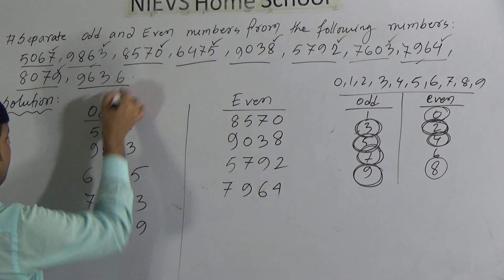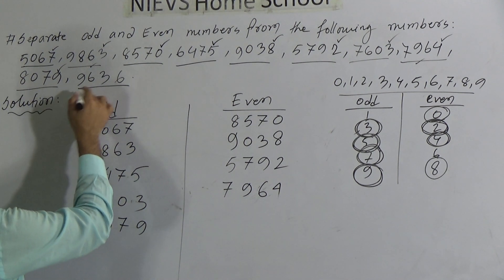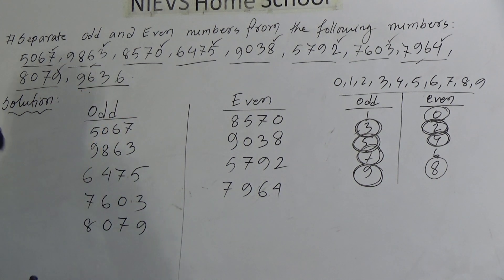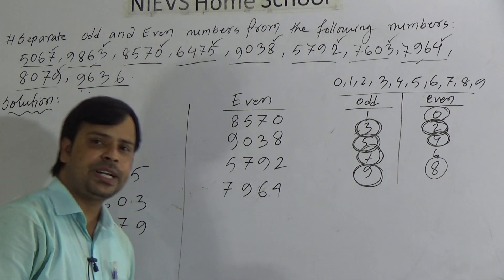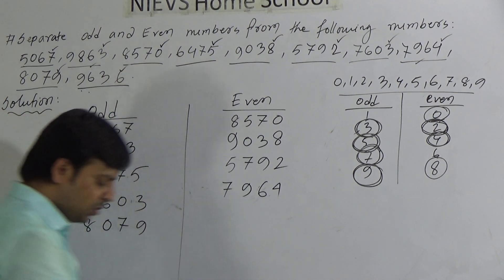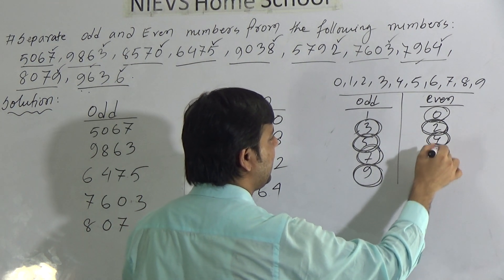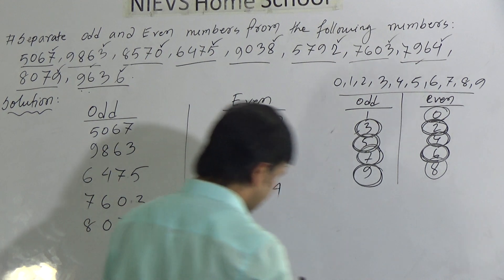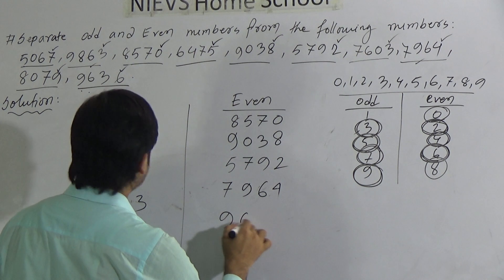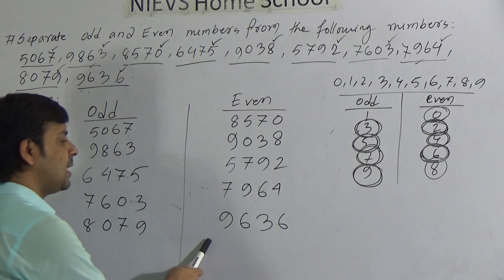Then the last number for today's question: 9636. Here the unit place is 6, and we know the number containing 6 in the unit place will be even as 6 is even. So we write 9636 under even.